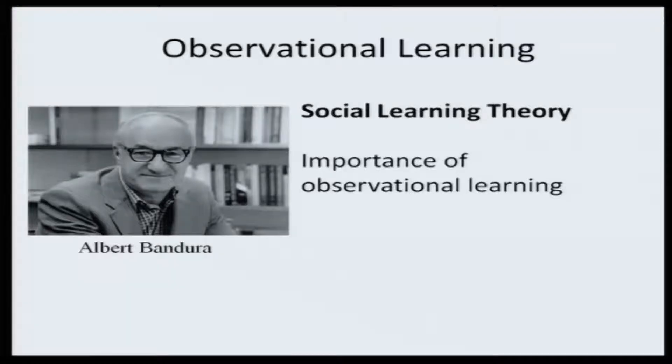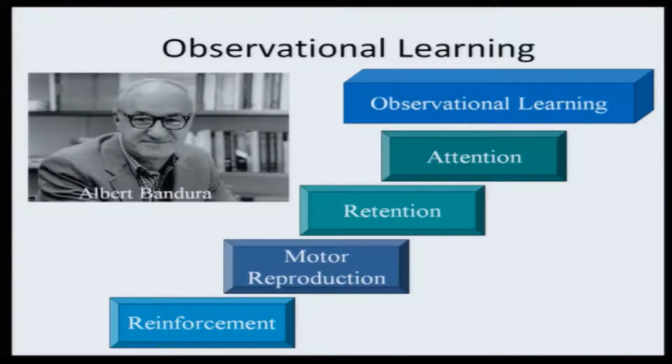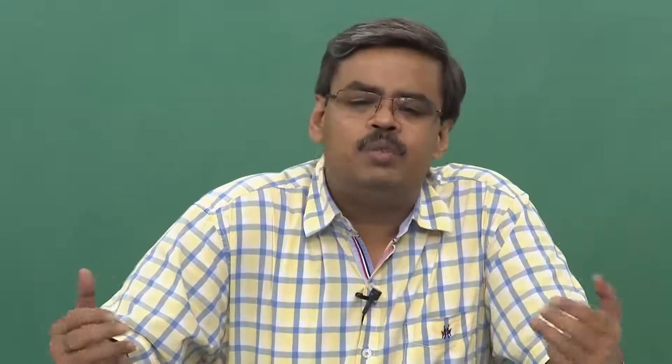Albert Bandura proposed the social learning theory, which gives utmost importance to observational learning. Observational learning says: first, you pay attention — you search for an idol or model for yourself, something you consider worth replicating. You adore your model and attend to their behavior. Then you retain that behavior. Next comes motor reproduction — you try to imitate it. When you imitate it, the world around you appraises you, and this appreciation becomes a reinforcement for you.